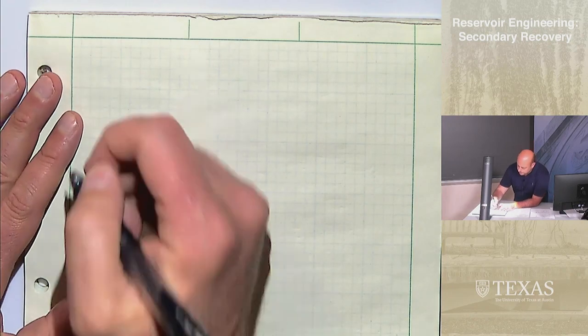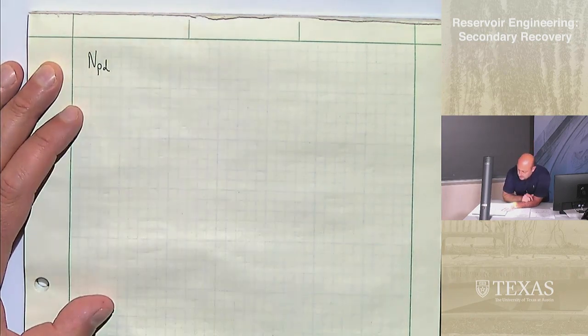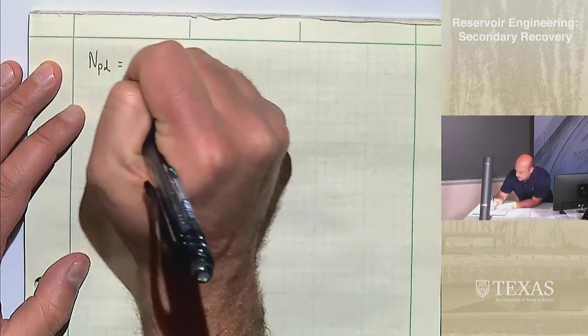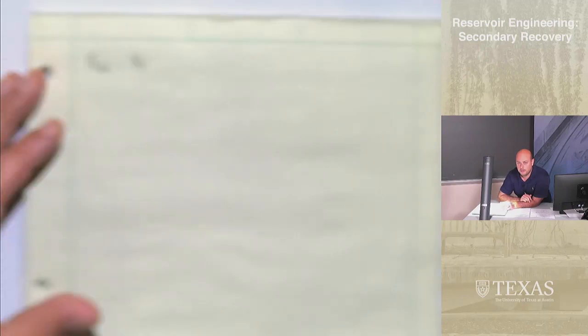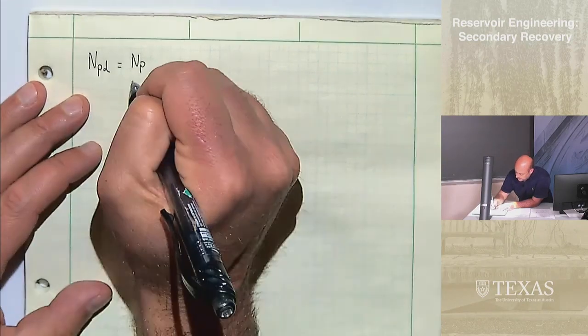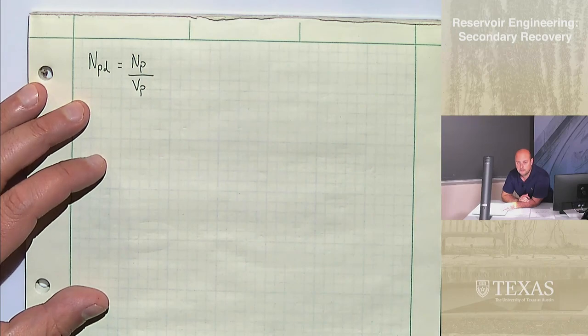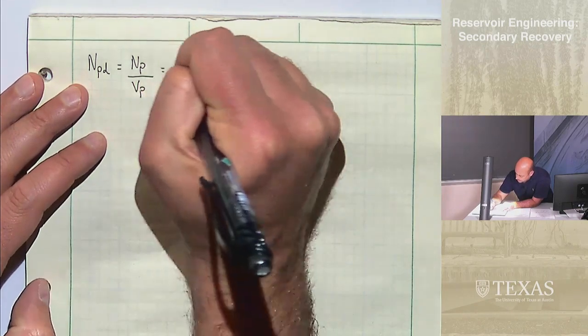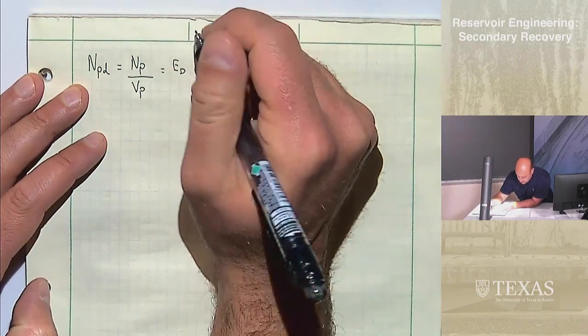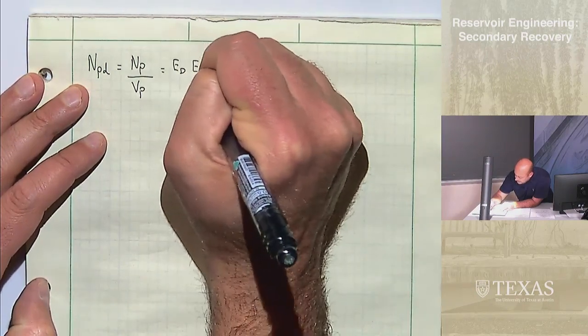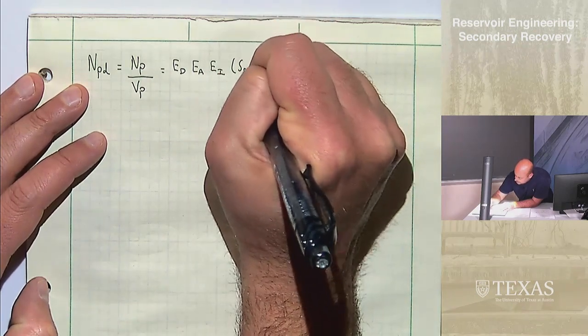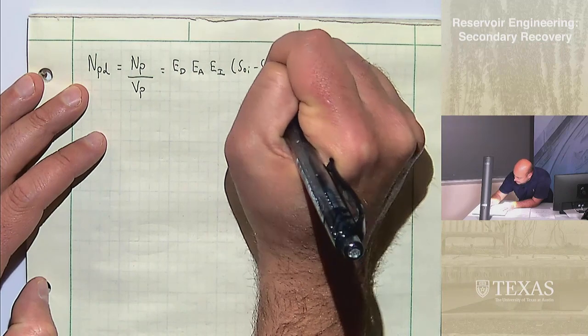Had I asked for the porosity, I would have either had to given you the bulk volume or given you the area and the length so you can calculate the bulk volume. We know the porosity is the pore volume divided by the bulk volume. What I wanted to remind you of is a really important formula. NPD is the dimensionless oil recovery.